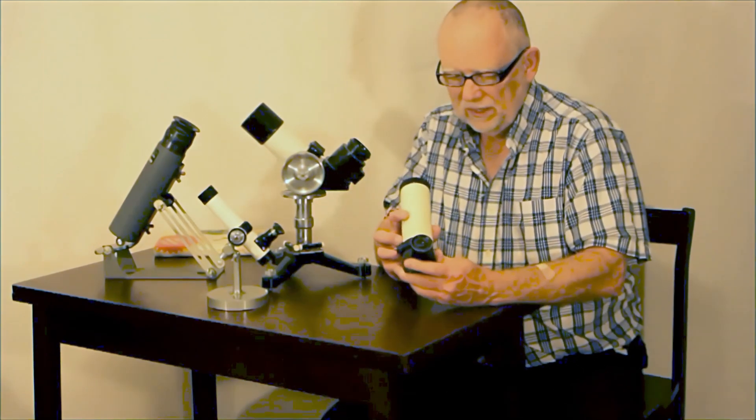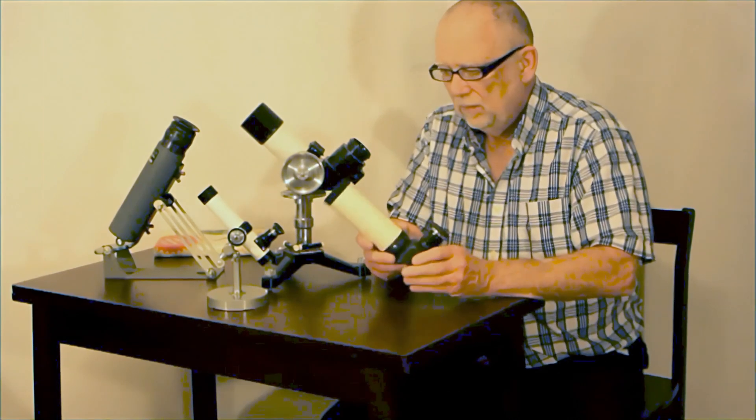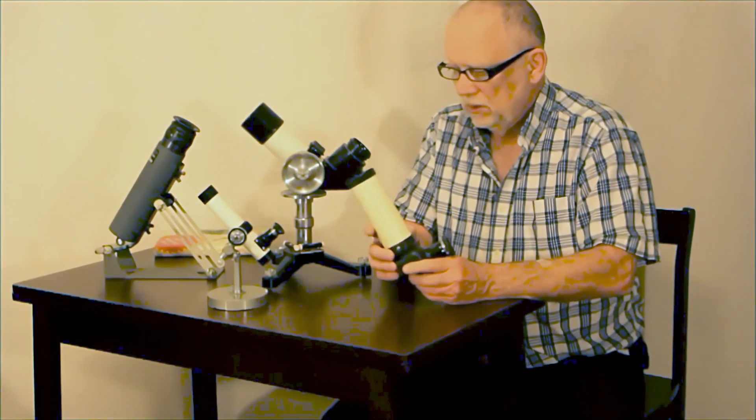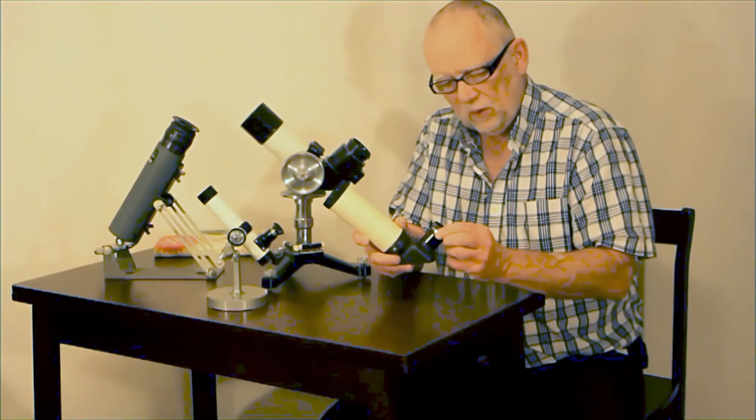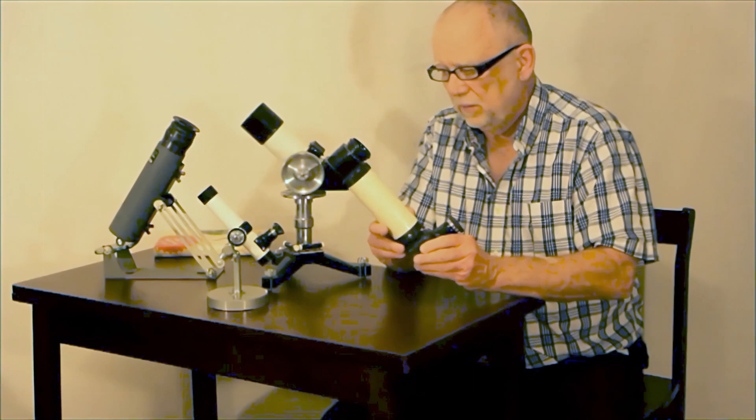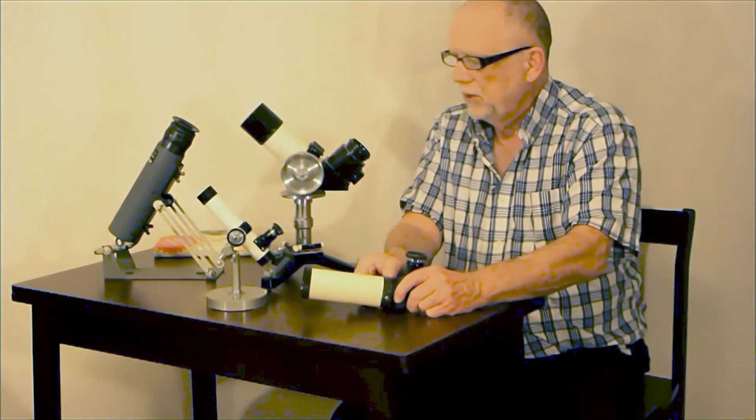This is another one called an SPI. And unfortunately, I don't have the mount for this. But the mount would have been similar to both of these mounts, kind of an alt-azimuth mount. And it's got a focusing eyepiece here. This is a 50mm aperture. This, I think, is a 30mm aperture.